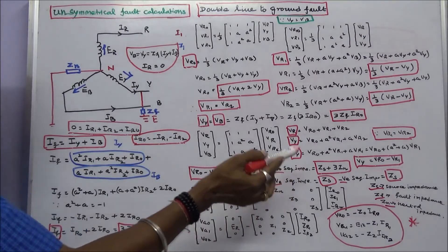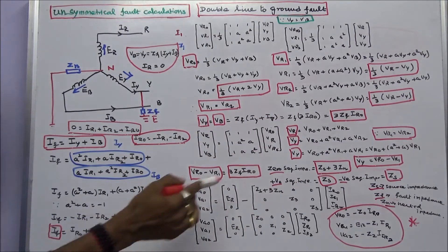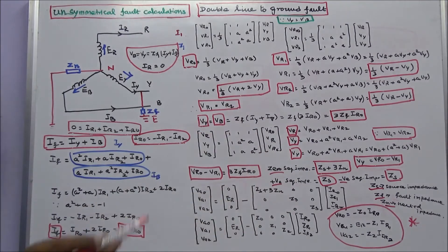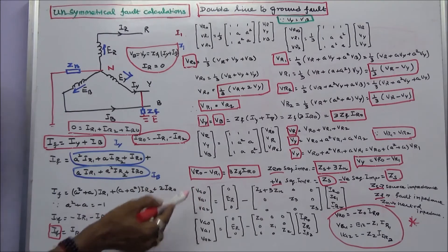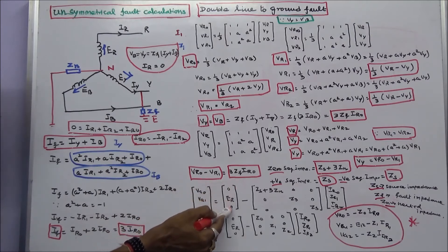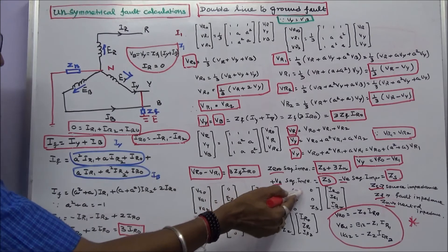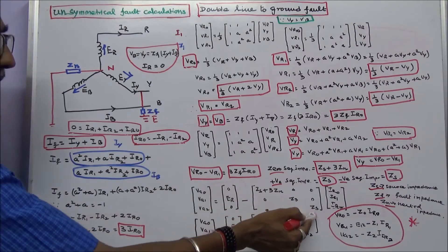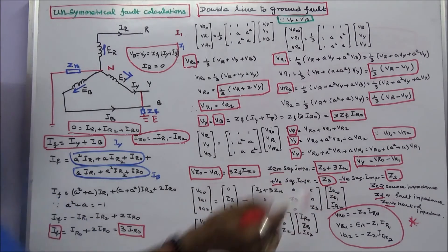The zero sequence impedance is Z0 equals Zs plus 3Zn. Positive sequence impedance is Z1 equals Zs. Negative sequence impedance is Z2 equals Zs. Writing the sequence voltages in matrix form: zero sequence voltage equals minus Z0 into IR0, positive sequence voltage equals Er minus Z1 into IR1, and negative sequence voltage equals minus Z2 into IR2.